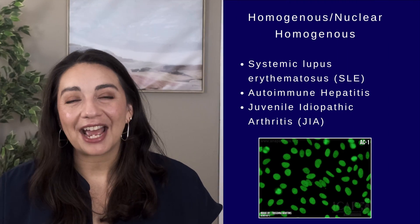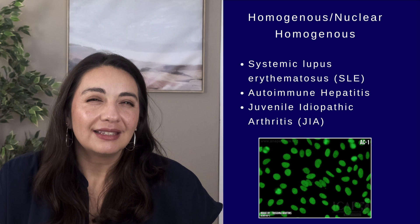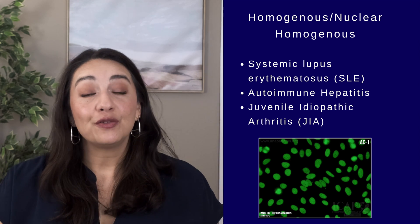The homogeneous pattern — also called nuclear homogeneous — is named because when the dye is applied, it spreads out homogeneously over the entire nucleus. This pattern can be associated with lupus, autoimmune hepatitis (which is liver inflammation due to autoimmunity), or juvenile idiopathic arthritis, which is an RA-like condition that can happen in kids. Lupus, autoimmune hepatitis, and JIA are very different conditions, so when this result comes back, the next step is determining which of those conditions to be most concerned about and then chasing that one with more questions and more tests.